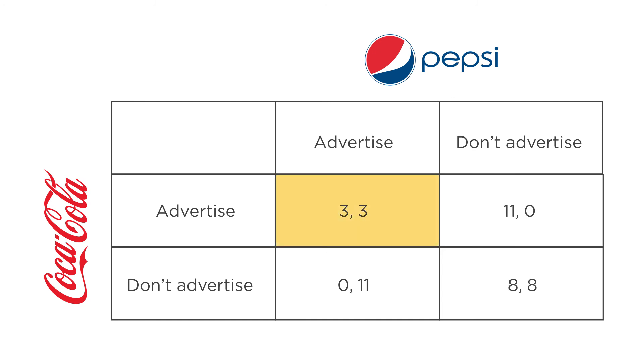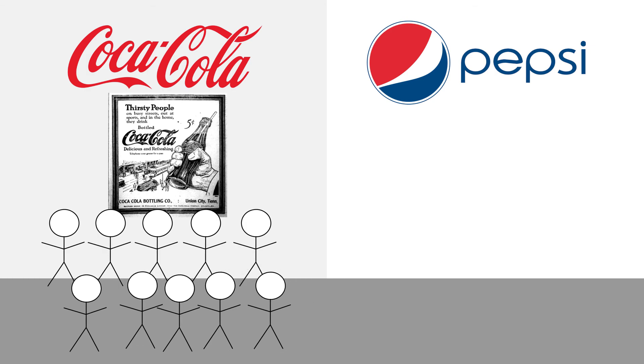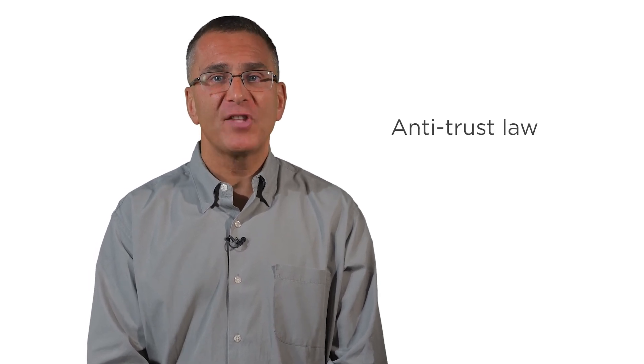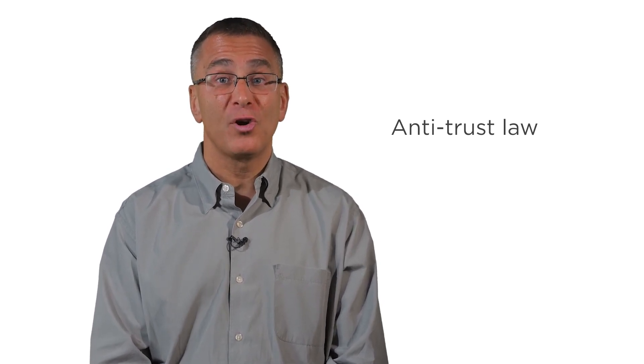A key feature of non-cooperative equilibria is the race to the bottom — both Coke and Pepsi are worse off if they don't cooperate than if they could. One way to stop this race is for Coke and Pepsi to agree not to advertise. But why don't they do this? For two reasons. First, it's hard to enforce cooperation — once an agreement is in place, both firms have an incentive to cheat and advertise, knowing the other thinks the deal still holds. Second, this type of cooperation between firms is illegal in much of the world, including the U.S. Most countries have anti-trust laws that ban this type of cooperative behavior because it's viewed as anti-competitive and bad for consumers. This is another reason why we won't be seeing any soda cartels in the U.S. anytime soon.